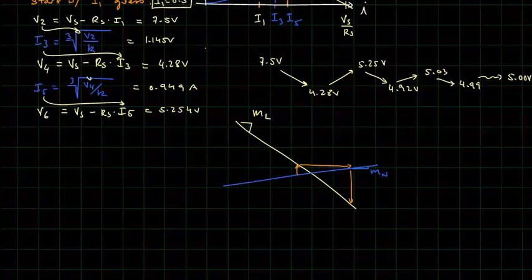Now notice in this case, if you're looking at the slopes, we have ML. The magnitude of ML is greater than the slope of MN. And in that case, we want to go counterclockwise.